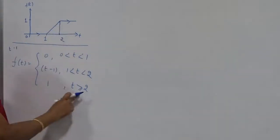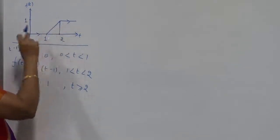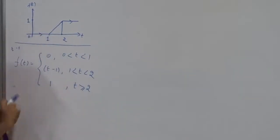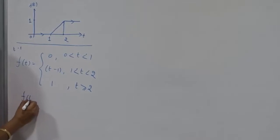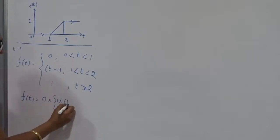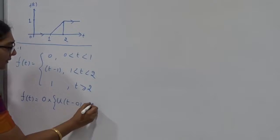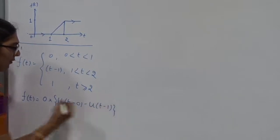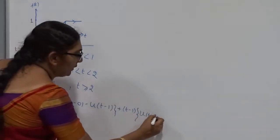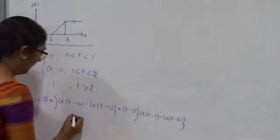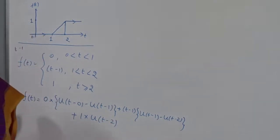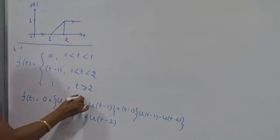After getting the function, we express it in terms of the Heaviside unit step function. The range for 0 is: 0 into [u(t minus 0) minus u(t minus 1)]. Then for the second function t minus 1, the range is 1 to 2: (t minus 1) into [u(t minus 1) minus u(t minus 2)]. Plus the last function, 1, into u(t minus 2). Since the first term is 0, that function vanishes.